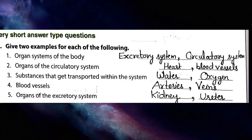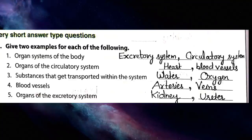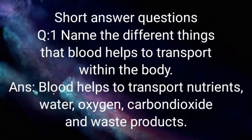Examples of blood vessels: arteries (A-R-T-E-R-I-E-S) and veins (V-E-I-N-S). Organs of the excretory system: kidney (K-I-D-N-E-Y), which purifies blood and forms urine, and ureter (U-R-E-T-E-R), a pair of tubes through which urine passes from kidneys to the urinary bladder.